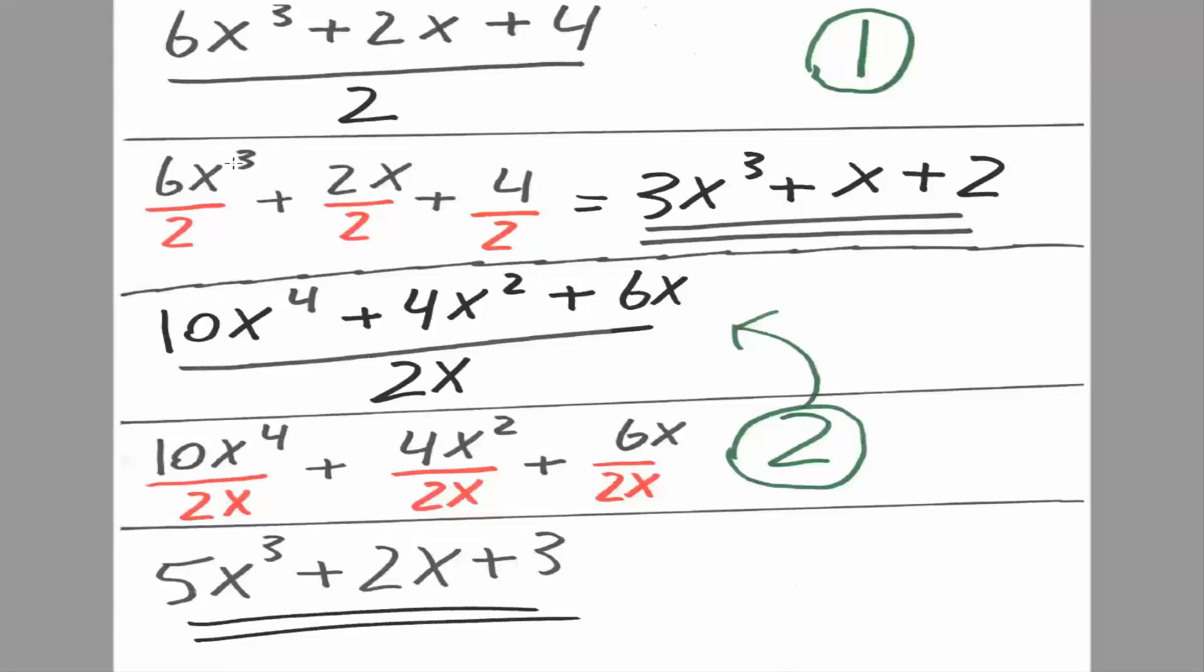So 6x cubed divided by 2 would give us 3x cubed. 2x divided by 2 would give us x. 4 divided by 2 would give us 2. And that would be the final answer.